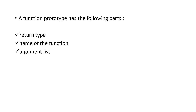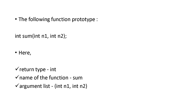A function prototype has the following parts: return type, name of the function, and argument list. Here is an example — this is the return type, this is the name of the function, and these are the arguments.